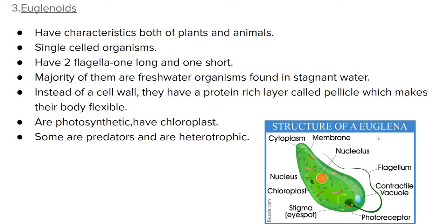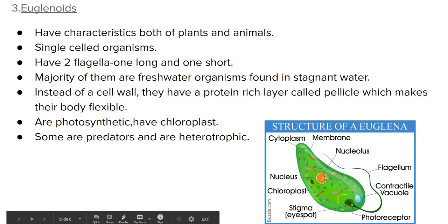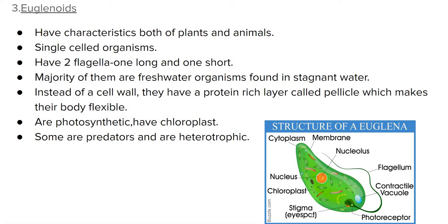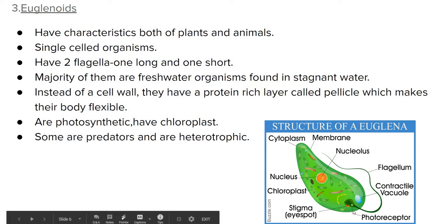Euglena is a member of the euglenoid group. It contains cytoplasm and all cell organelles — mitochondria, nucleus, nuclear membrane, nucleoid, and chloroplast. It has one big flagellum and a contractile vacuole. It also has a photoreceptor that can sense light, and it has an eye spot.